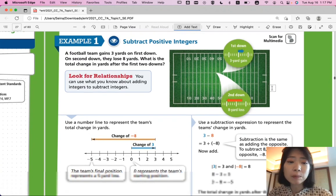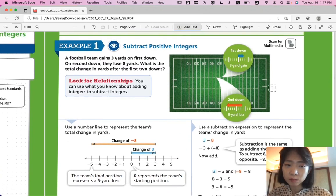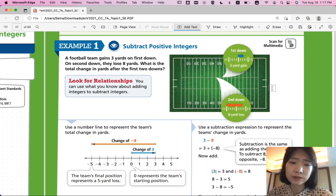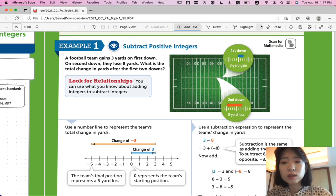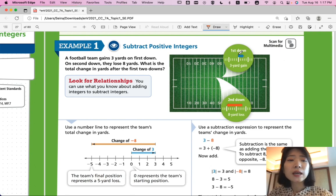Let's look at example 1. Subtract positive integers. A football team gains 3 yards on first down. On second down, they lose 8 yards. What is the total change in yards after the first two downs? So they start from 0, they gain 3 yards. So they're from here, this team.